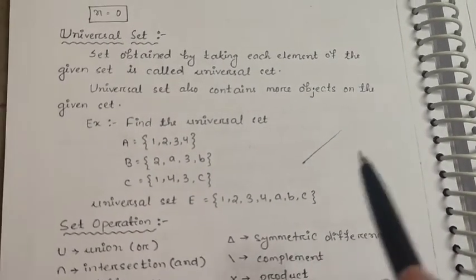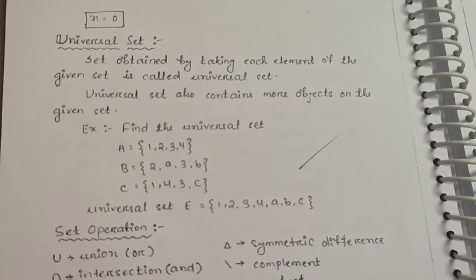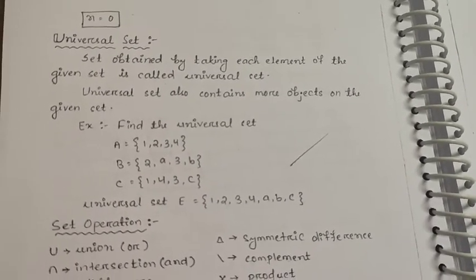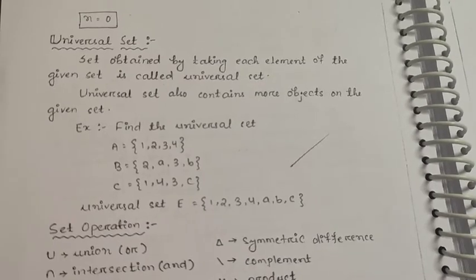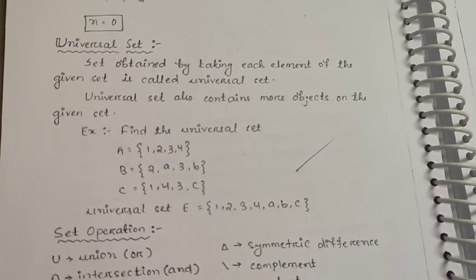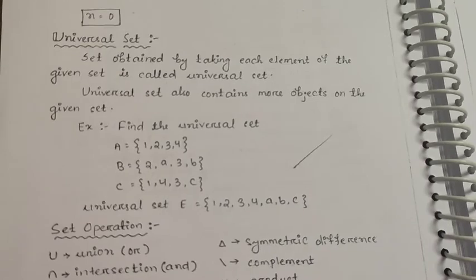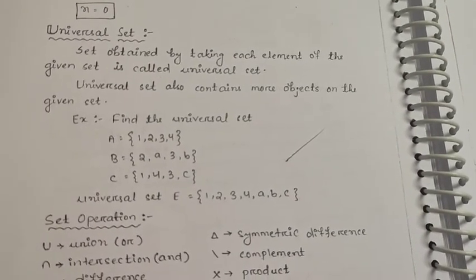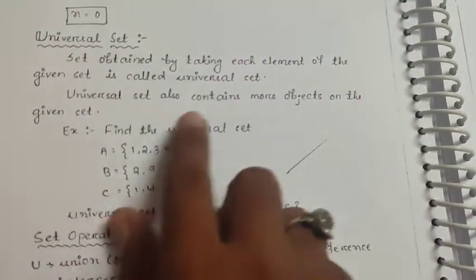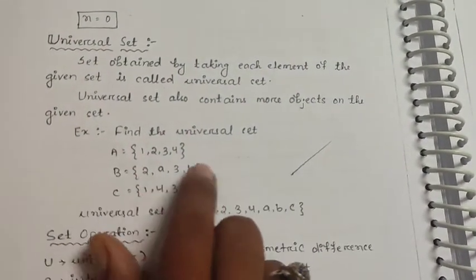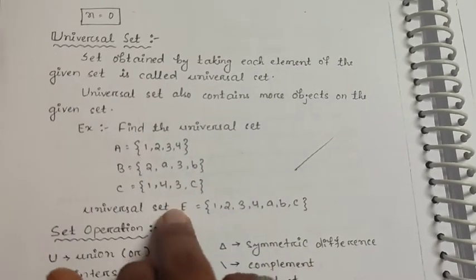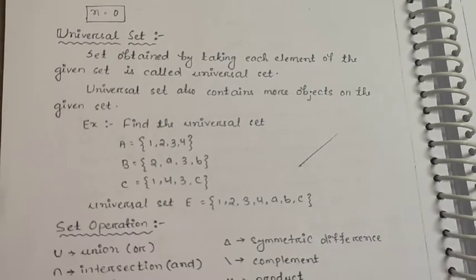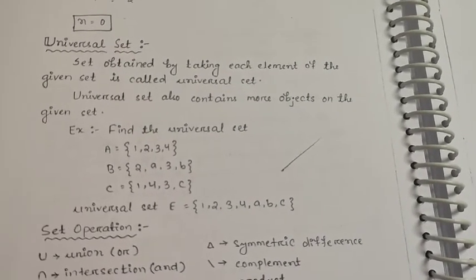Next, universal set. The set obtained by taking each element of the given sets is called the universal set. The universal set can also contain more objects than the given sets.